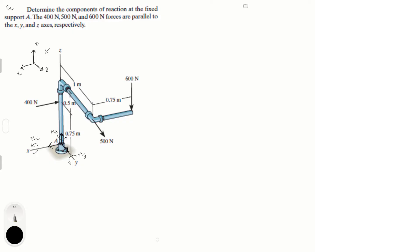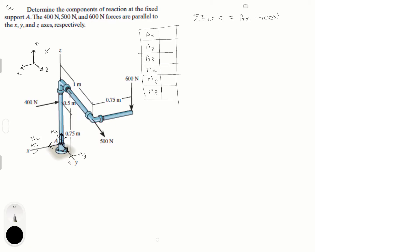Let's draw our neat little table: AX, AY, AZ, MX, MY, MC. We have 6 variables, so let's use our static equations to find them. Sum of the forces in X is equal to 0. You have AX going towards the positive axis minus 400 newtons going towards the negative X axis. So AX is equal to 400 newtons.